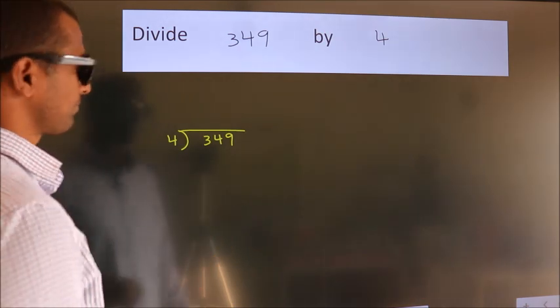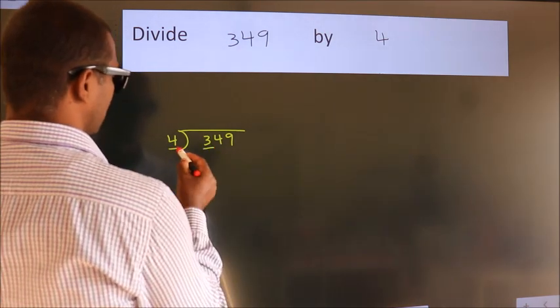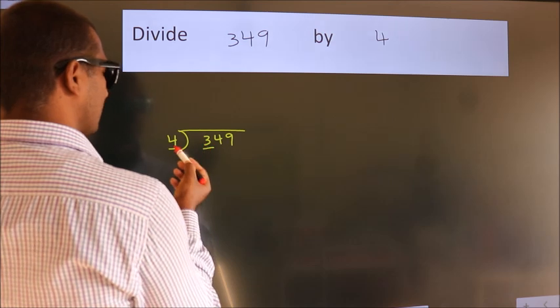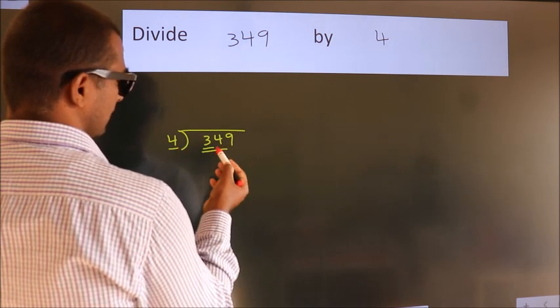Next, here we have 3, here 4. 3 is smaller than 4, so we should take two numbers: 34.